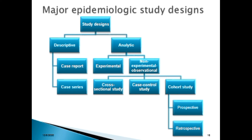Analytic studies are further grouped into two: non-experimental and experimental. Non-experimental studies are further categorized into cross-sectional, case control, and cohort studies. The experimental studies are what are known as randomized trials, or randomized controlled trials.